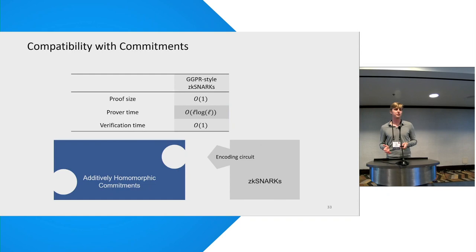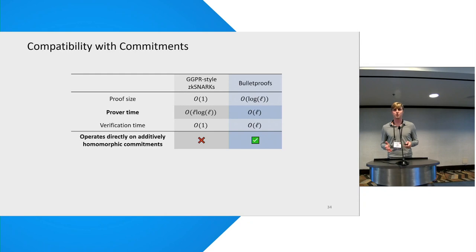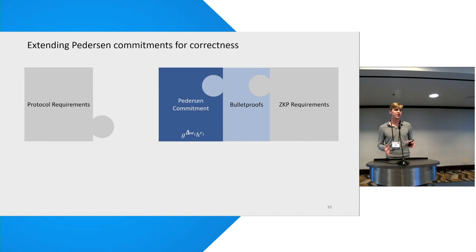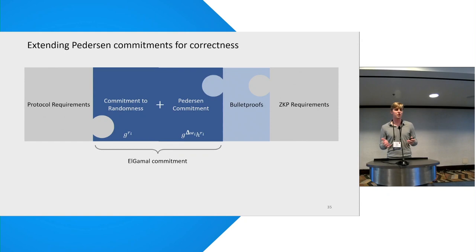In ROFO we use bulletproofs, which can operate directly over homomorphic commitments. While SNARKs tend to outperform them for general proofs, bulletproofs are highly efficient for the range proofs we require, and their proof size is also very competitive — only a few kilobytes for a million range proofs due to efficient range proof batching. Getting back to the encoding: bulletproofs are generally instantiated over Pedersen commitments, and to support correctness we extend this to an ElGamal commitment by including a group element with the randomness, allowing the server to homomorphically add up the randomness to check that it equals R'.